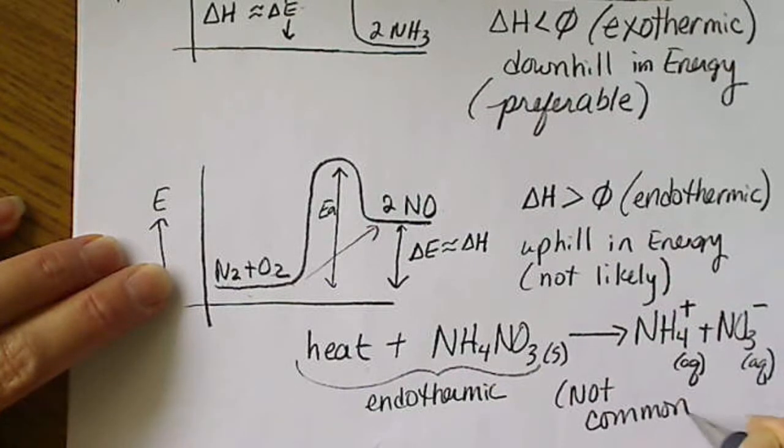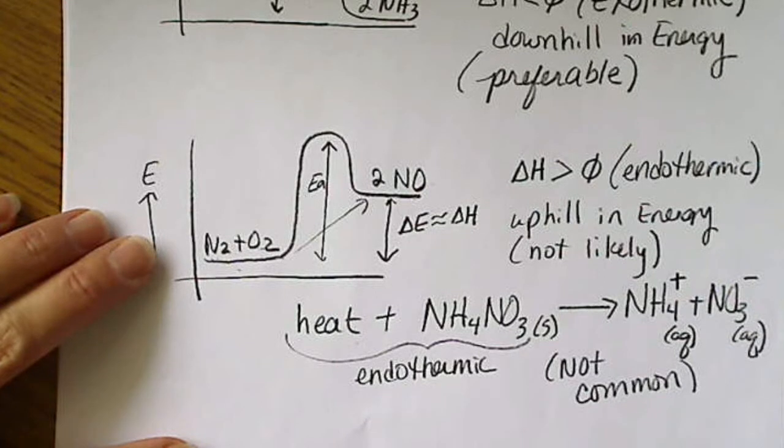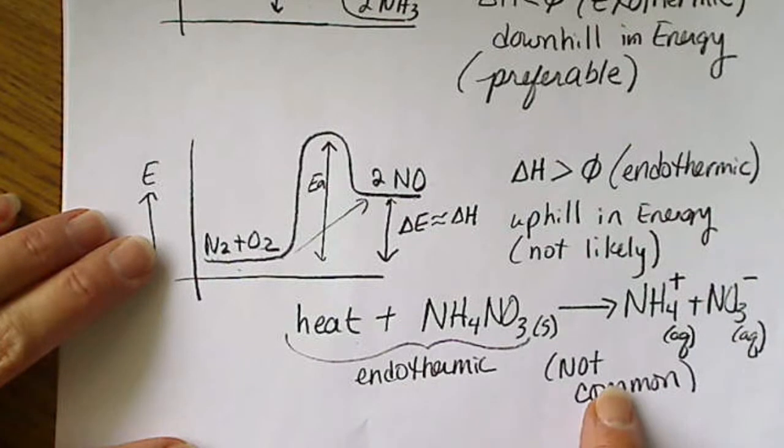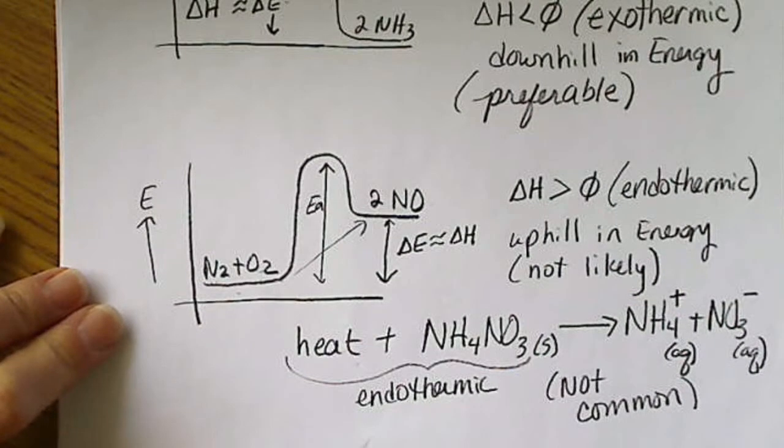So what we're going to do when we look at the entropy term is see how that is a disorder term. The entropy term must be great enough in order to compensate for the fact that this reaction is going uphill in energy.